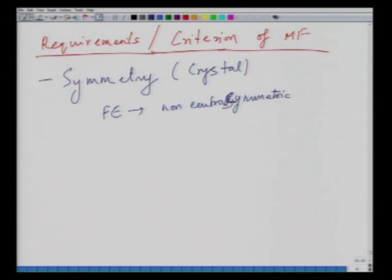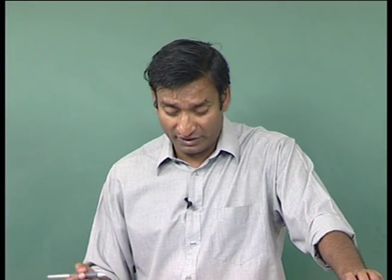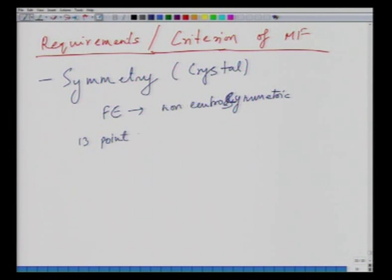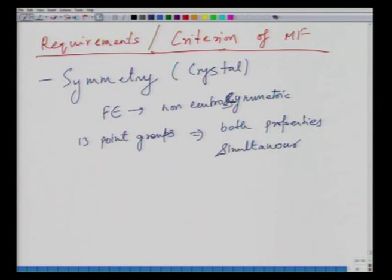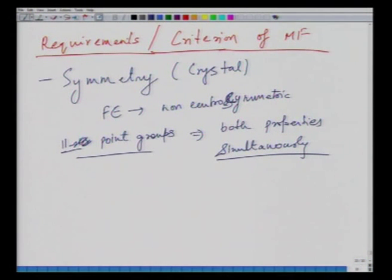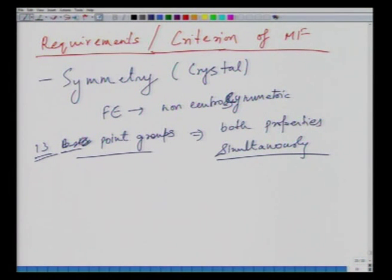For simultaneous ferroelectricity and magnetic ordering, calculations show 13 point groups can exhibit both properties. However, since materials belonging to these 13 point groups are very numerous, symmetry alone is not a strict or discriminating criterion — it is unlikely to be the defining criterion.